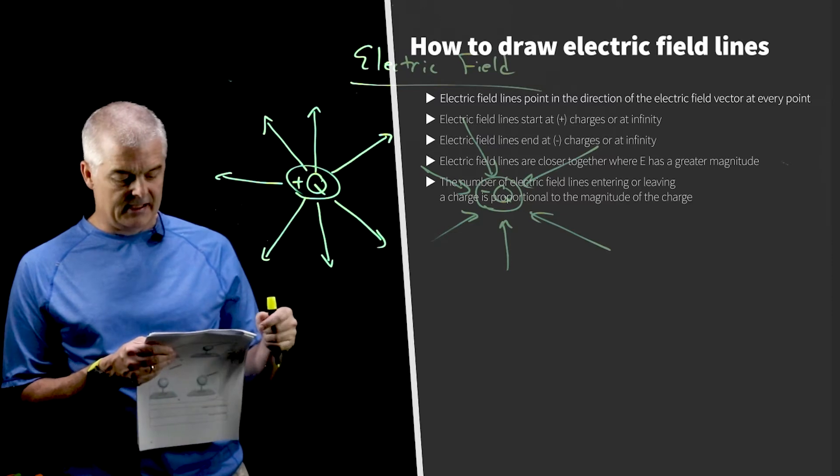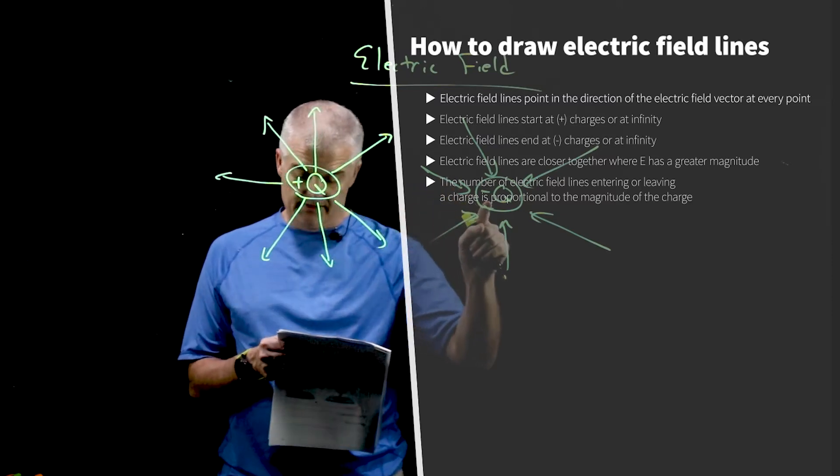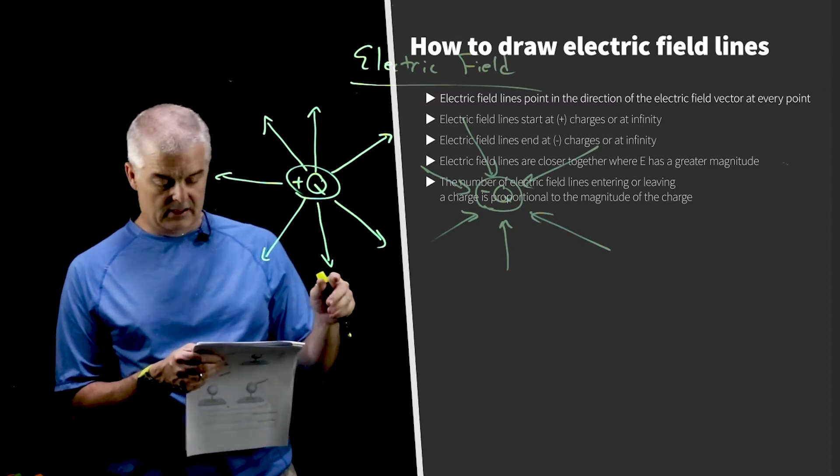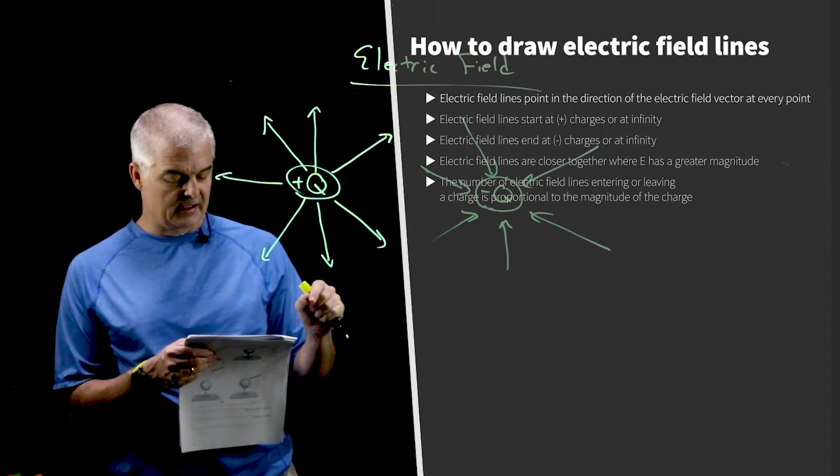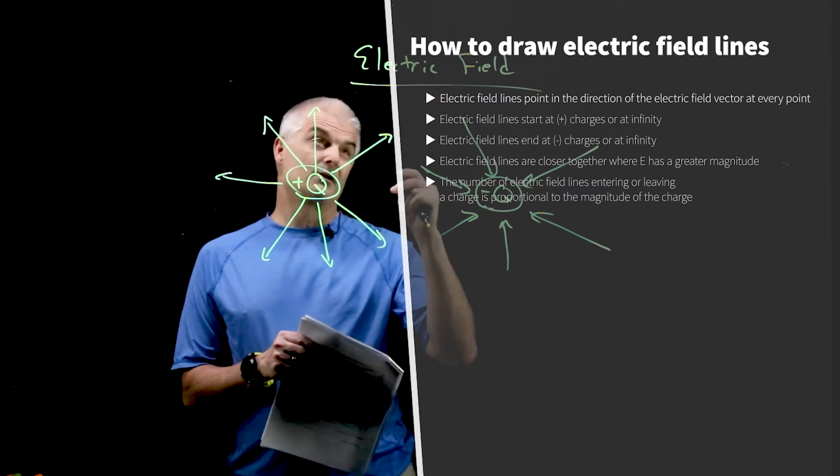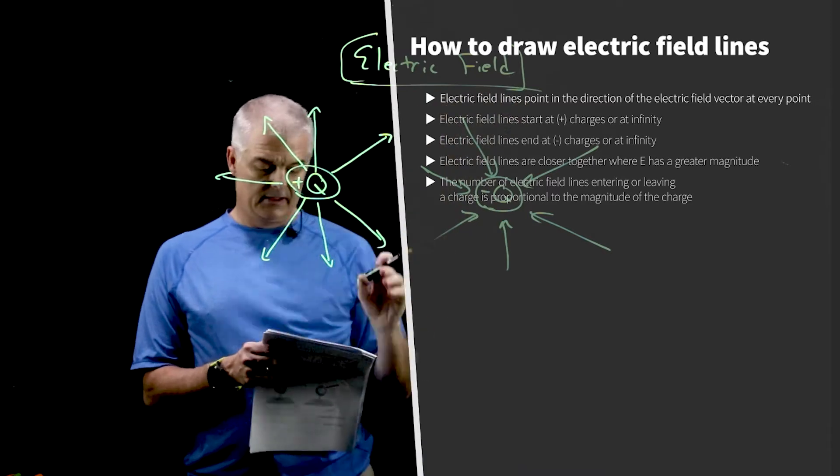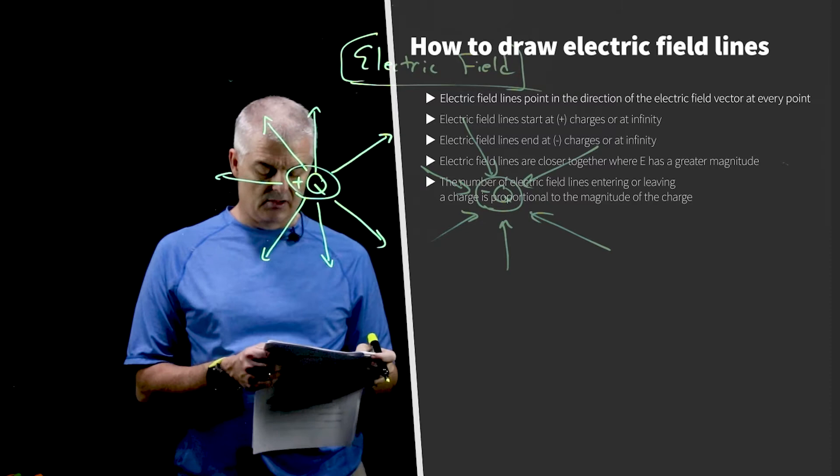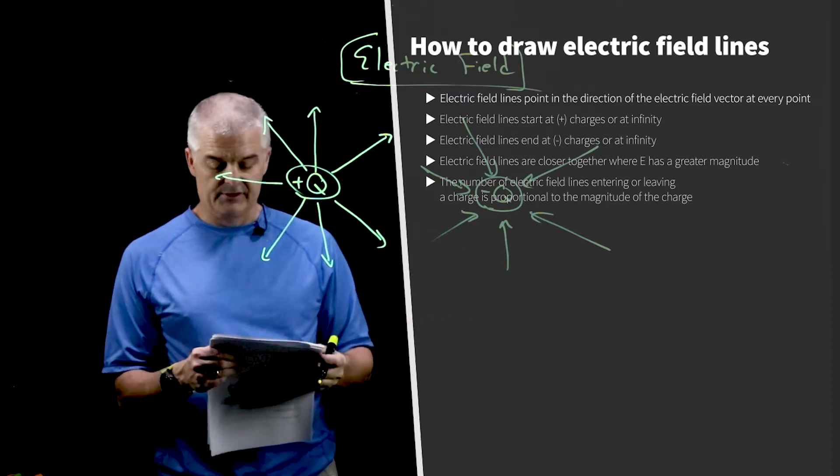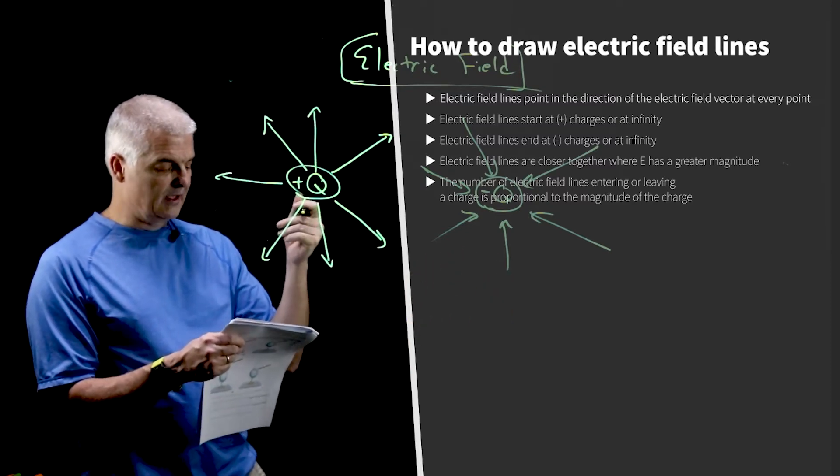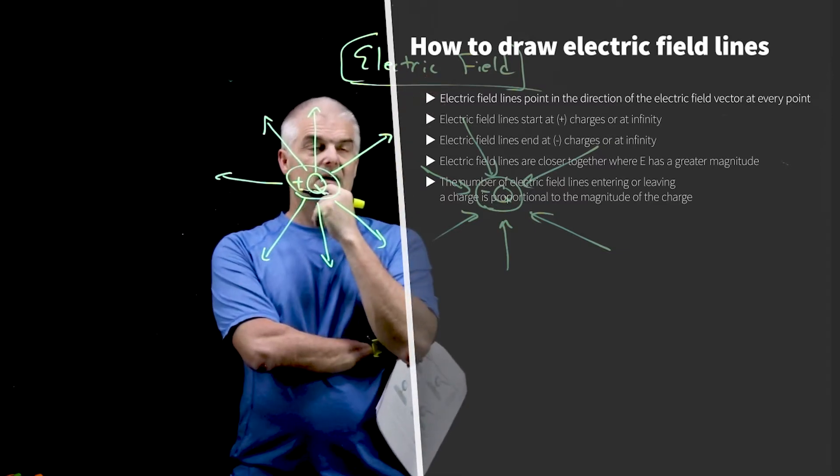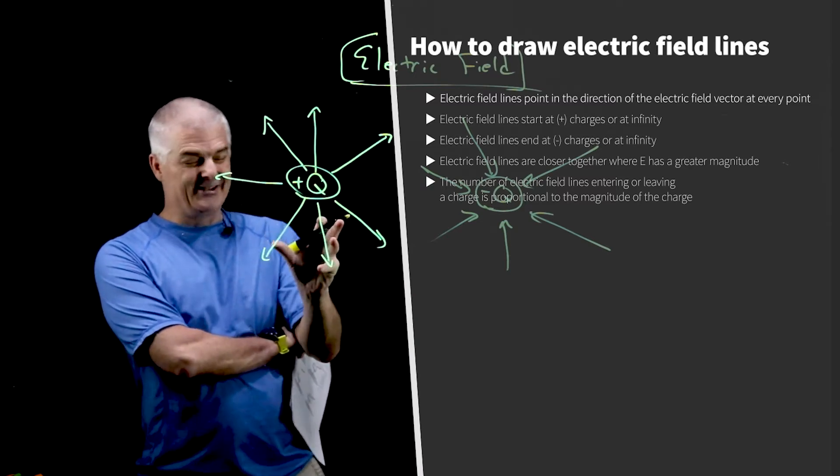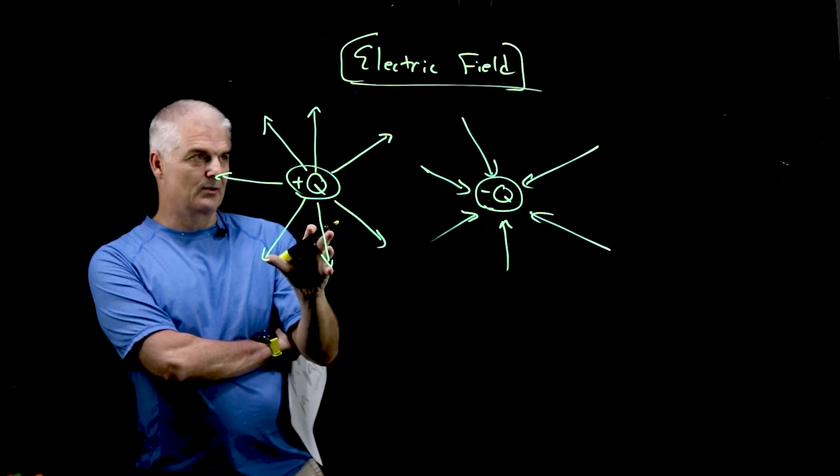Number three, electric field lines end at negative charges or they can sometimes even end at infinity. Number four, electric field lines are closer together when the electric field has a greater magnitude. They're closer together if the electric field is stronger. And then the number of electric field lines entering or leaving is proportional to the strength of the magnitude of the electric field. So make sure you jot those down so that you can do problems when we work this out.